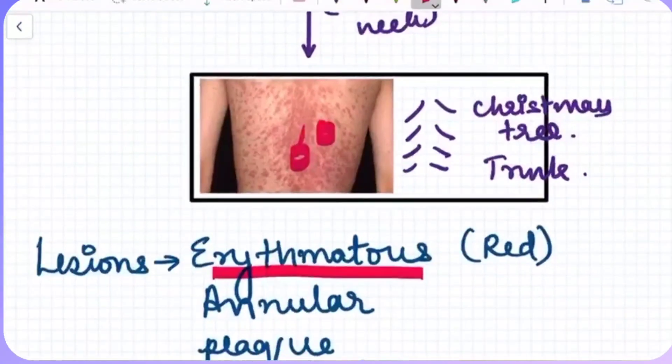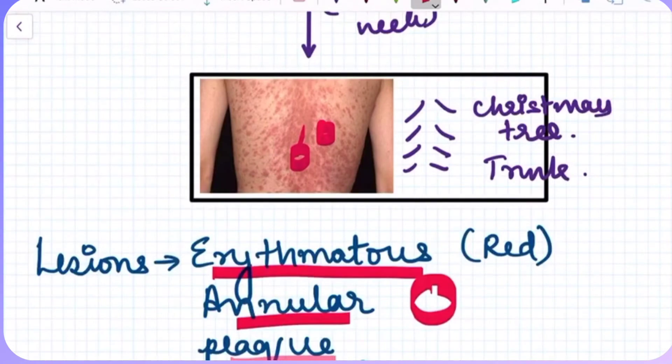It is annular, meaning it is round, and these are solid raised lesions of more than one centimeter, so a plaque.